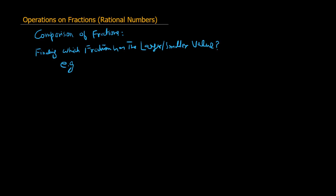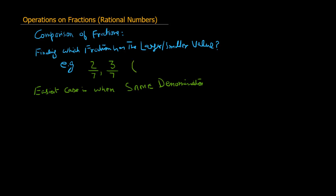For example, we are given two fractions: 2 divided by 7 and 3 divided by 7. Which fraction is the larger? This is the easiest possible case when both have the same denominator. When comparing fractions, the important thing is the denominator. If the denominator is the same, then the fraction with the larger numerator is larger.